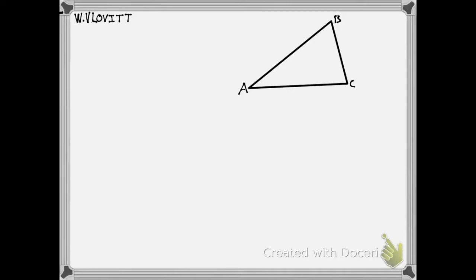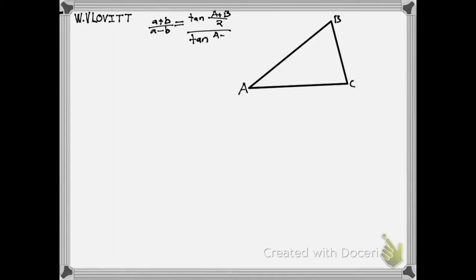As a reminder, the law of tangents states that (a + b) / (a − b), where a and b are two sides in any triangle, is equal to tan((A + B) / 2) over tan((A − B) / 2), where A and B are the angles opposite sides a and b.